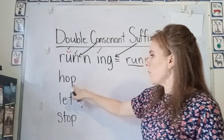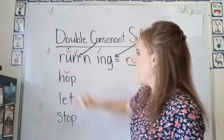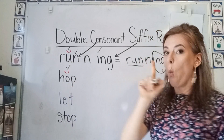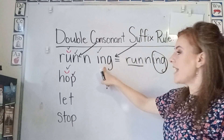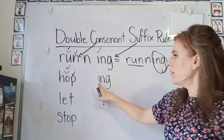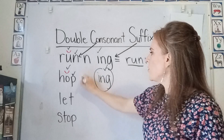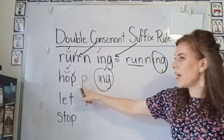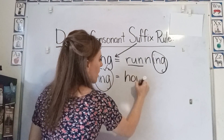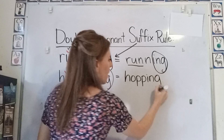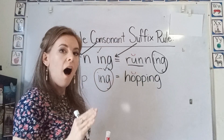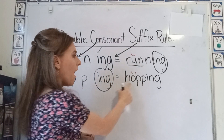So here's another example. We have a short vowel, and we have one consonant. And we're going to add a suffix that begins with a vowel. So we're going to double our consonant. We're going to put another P. So this word becomes hopping. These are short vowels and we double the consonants. Hopping. Running. Hopping.